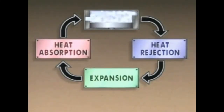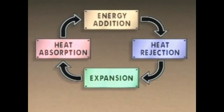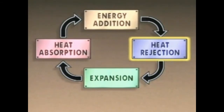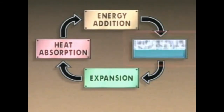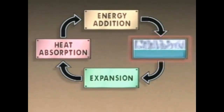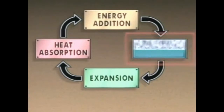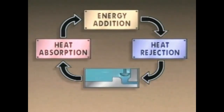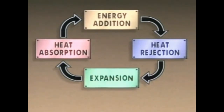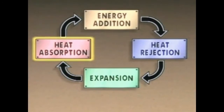A vapor compression refrigeration cycle is basically a four-step process in which heat is absorbed from a heat source, the evaporator, and transported to a heat sink, the condenser, where it is rejected from the cycle. Since the steps repeat, the cycle is a closed system and it is designed to operate continuously. A refrigerant is used to transport the heat from the heat source to the heat sink.